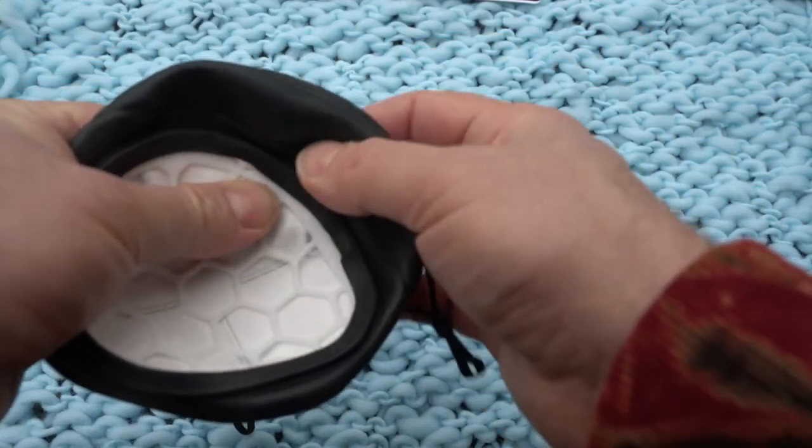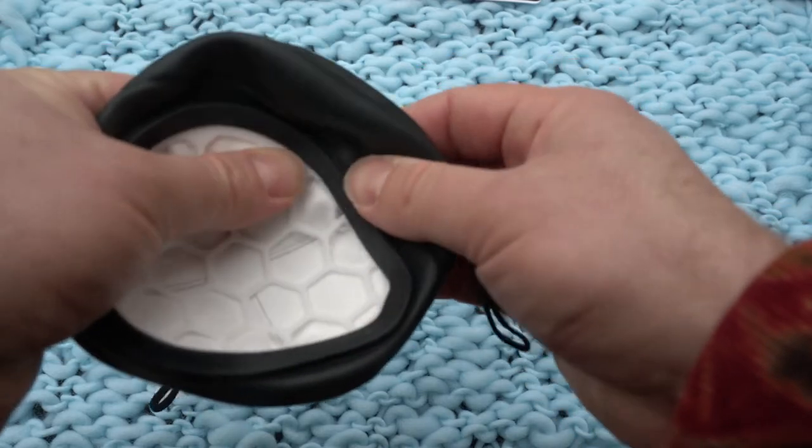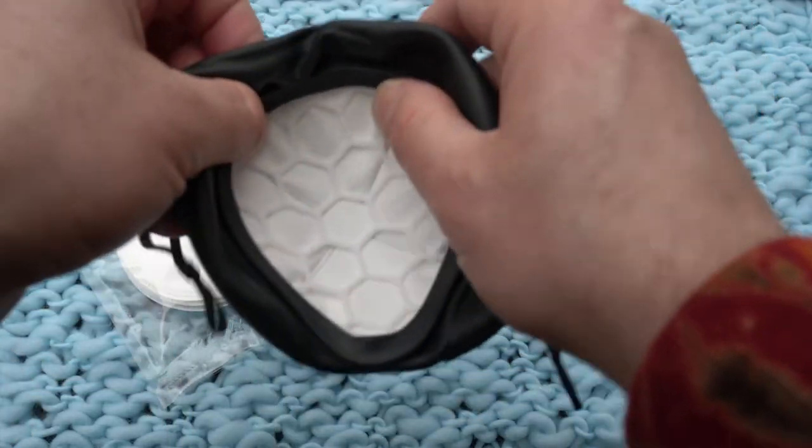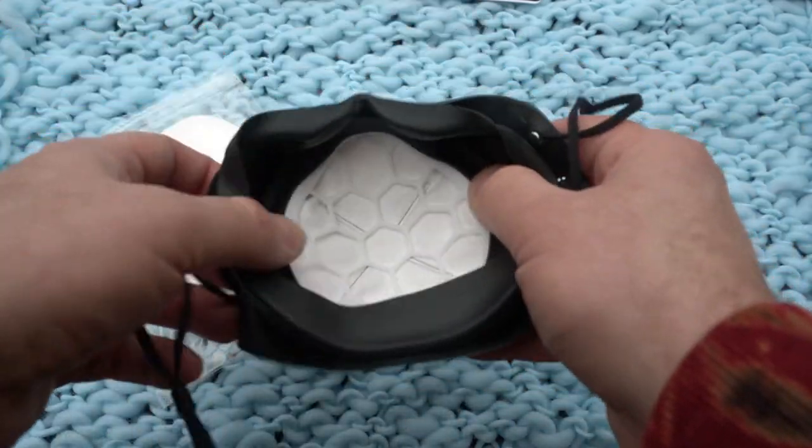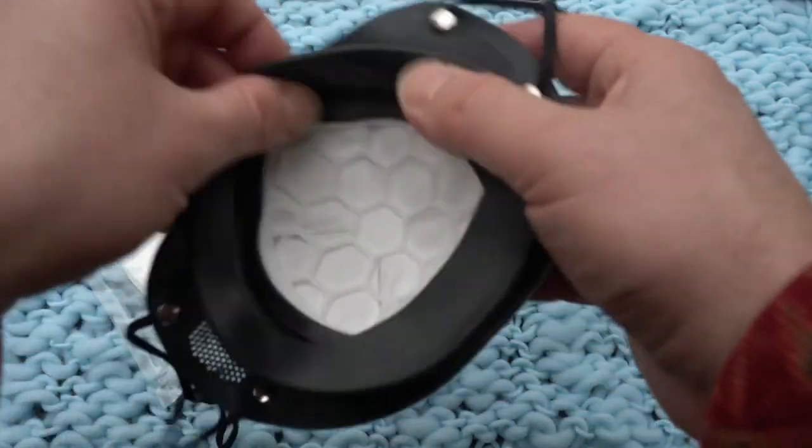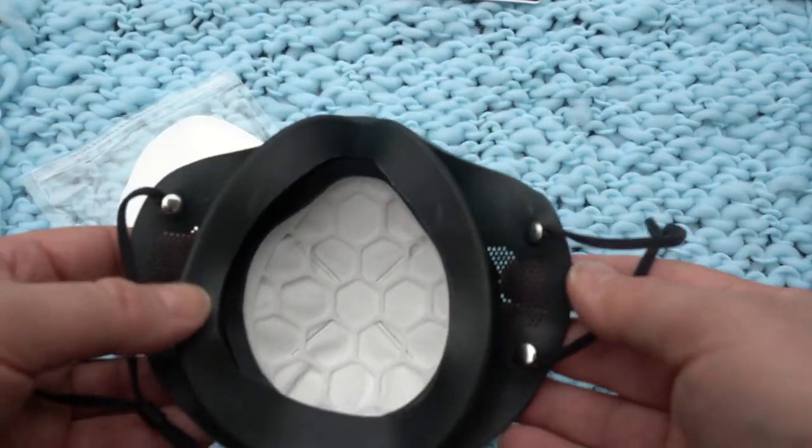You can see I'm just putting that silicone seal around the filter and filter frame. Now I'm just right-siding it out. And you're done.